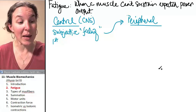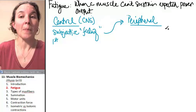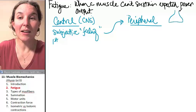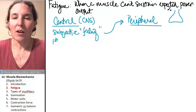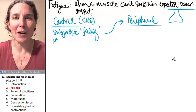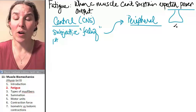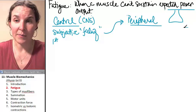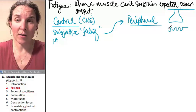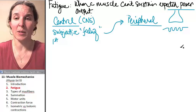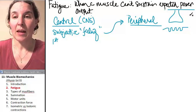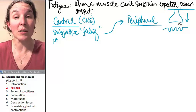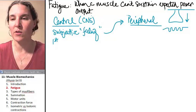Peripheral fatigue is basically any decrease in power output that happens from the synapse or the neuromuscular junction on. So anywhere from here, this is my little skeletal muscle, from here on, this would be a possible cause of peripheral fatigue. Let me give you some examples.